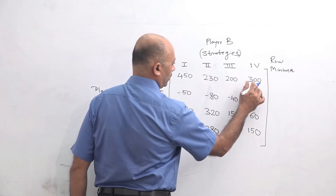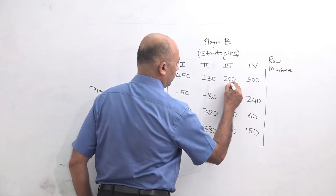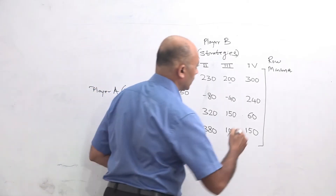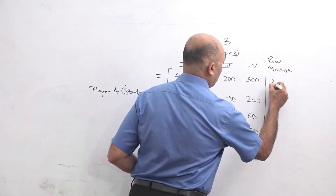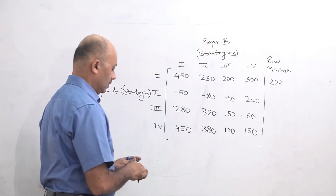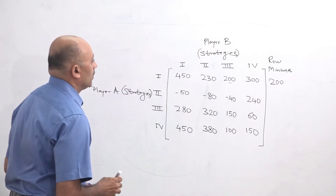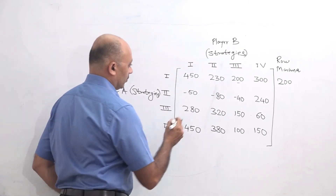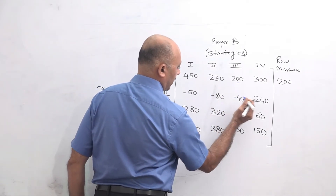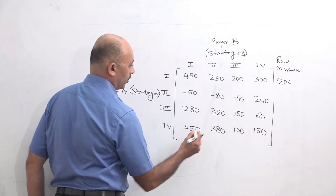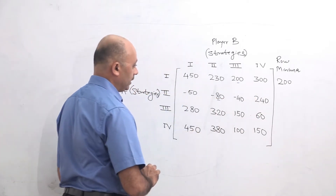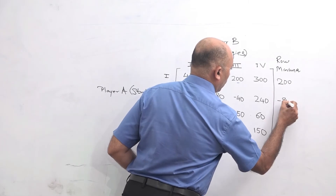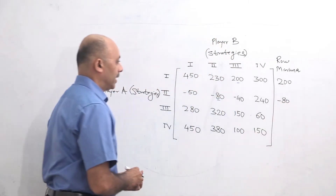So we start from row number 1: 450, 230, 200, 300. The minimum value is 200, so we will write row minima as 200. Then for the second row: minus 50, minus 80, minus 40, and 240. The minimum value is minus 80, so we will write row minima for row 2 as minus 80.